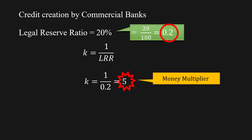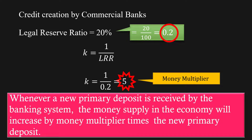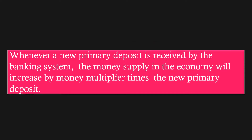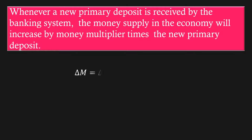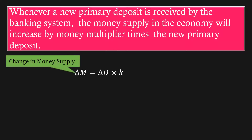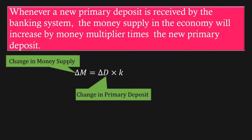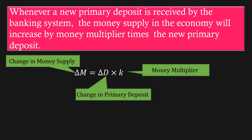It is to be interpreted like this: whenever a new primary deposit is made with a bank, the money supply in the economy will increase by 5 times. Our conclusion is, whenever a new primary deposit is received by the banking system, the money supply in the economy will increase by money multiplier times the new primary deposit. Algebraically: ΔM = ΔD × K, where ΔM is change in money supply, ΔD is change in primary deposit, and K is money multiplier.